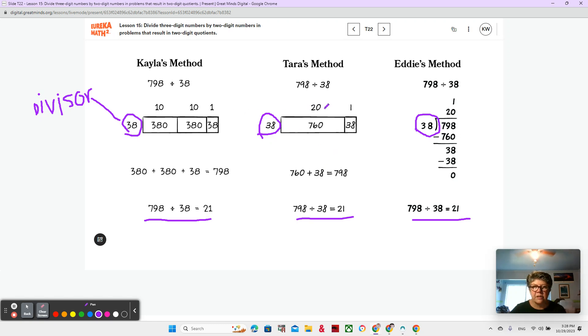Notice that Tara has a 20 and a 1, and Eddie has a 20 and a 1. Do you see that? There's subtraction here inside the vertical form, but in the area model, you don't use subtraction. Then you use addition. That's interesting.